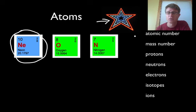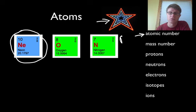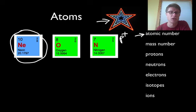Essentially what we're looking at is the periodic table is organized according to its atomic number. So the atomic number is going to tell us the number of protons that we have. What else does the atomic number tell us? It also tells us the number of electrons that an element has, because the positive charges of the protons and the negative charges of the electrons will always equal each other out.